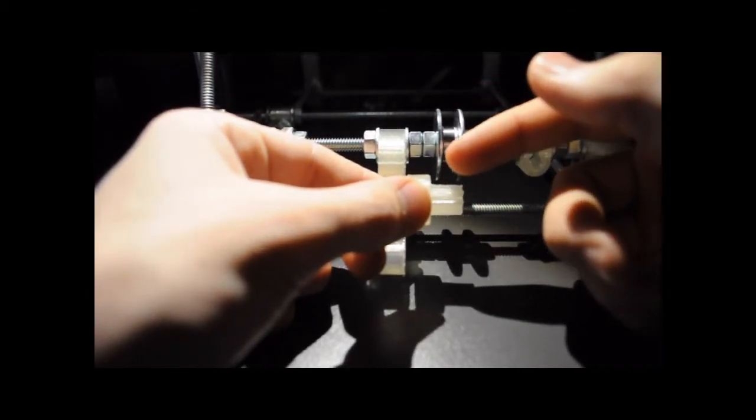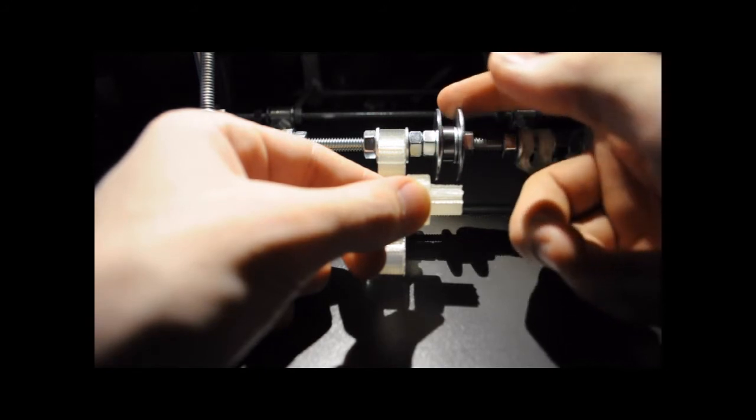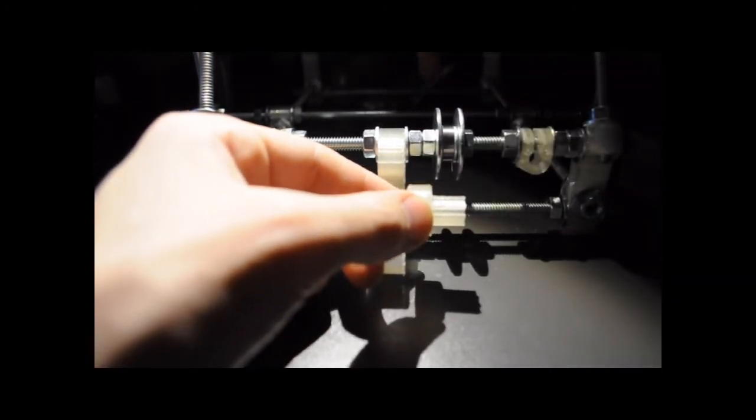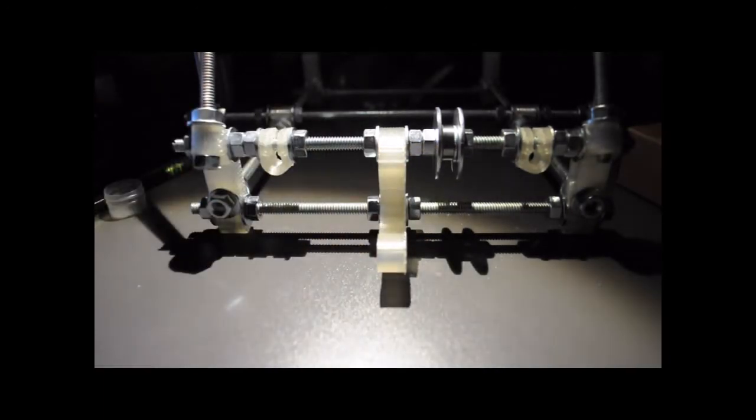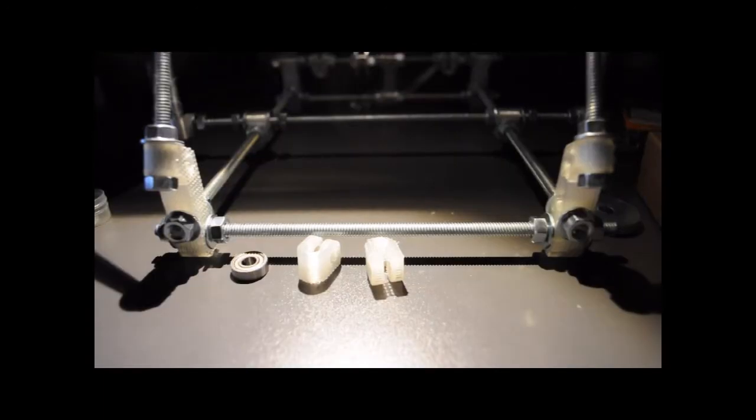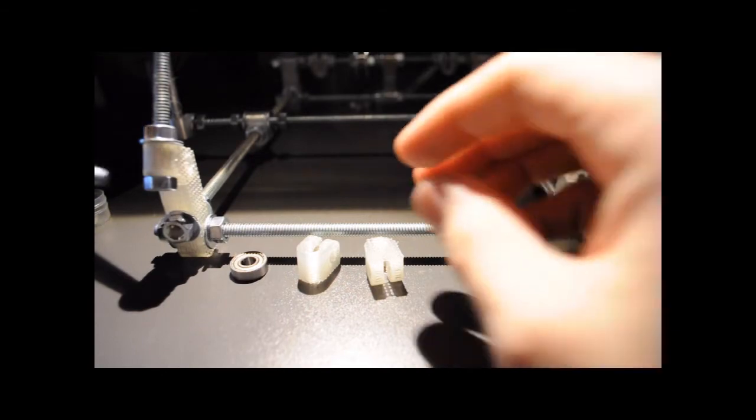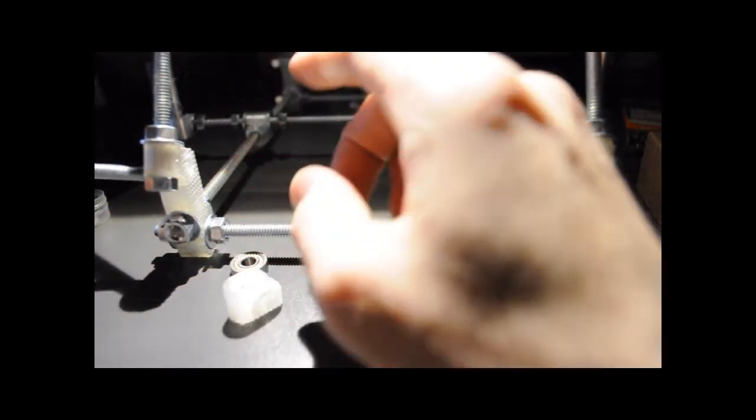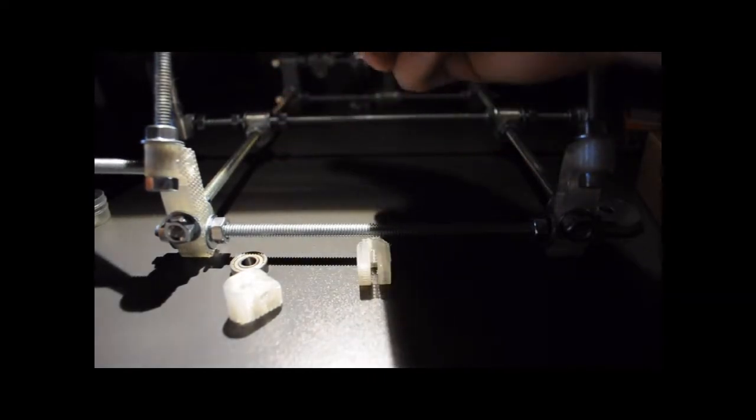The belt's going to be riding up from the pulley over to a pulley way back here that I'm going to install right now. This side's a lot easier. All it's got is the two supports for the smooth rods and the pulley. Don't have to deal with the motor bracket.